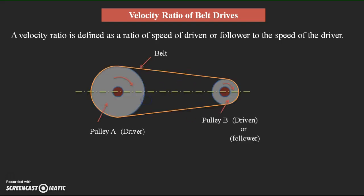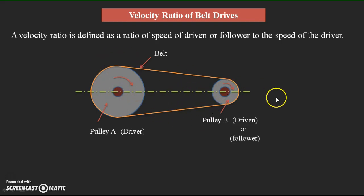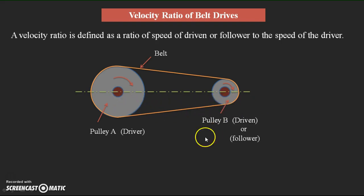Let us take an example of a simple belt drive system. This is a simple belt drive system with the driver and driven which are connected on the shaft. The belt is provided to transmit the rotary motion, that is the power, from driver to driven.